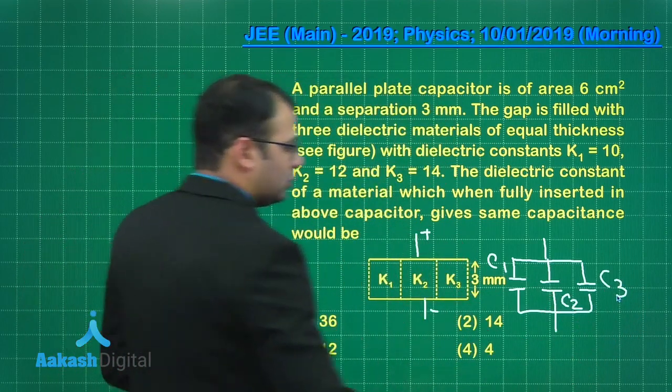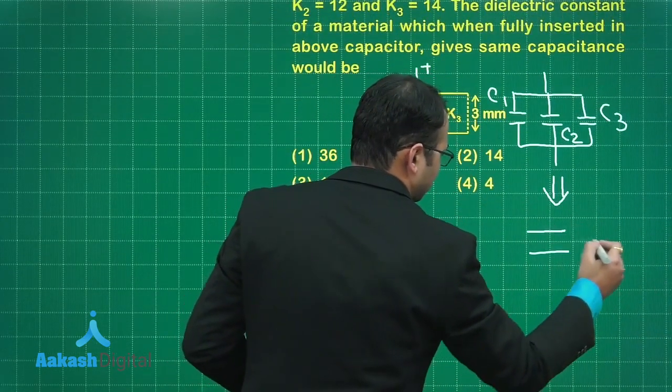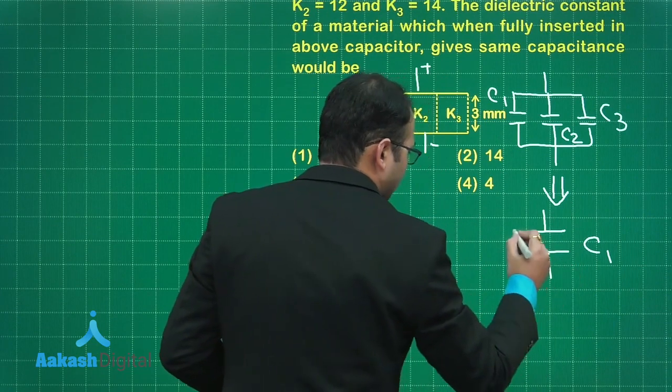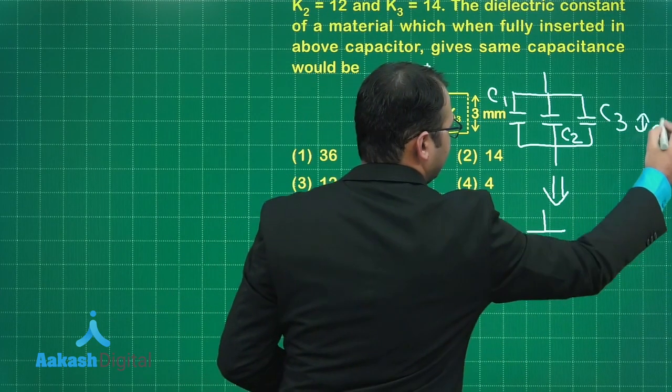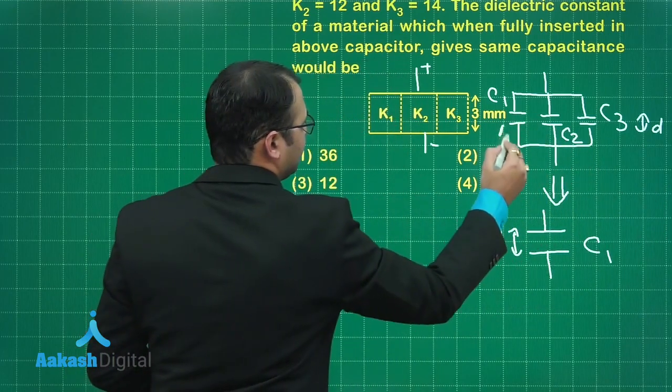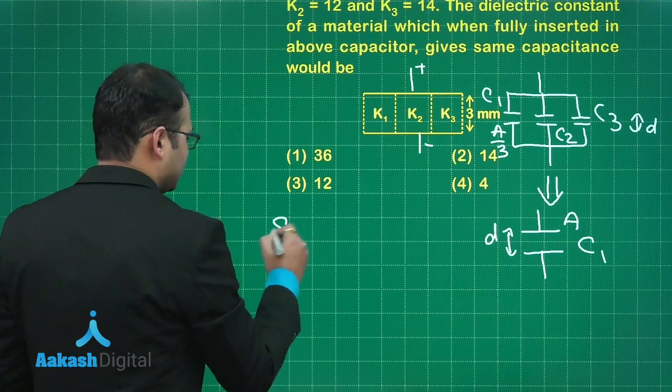Now if I want to form a single capacitor in place of this, so this would be the single capacitor. Distance between the plates will remain as it is which will be remaining D. Only the area will be here, that would be one-third, instead area will be here as A. So let's start with solution.